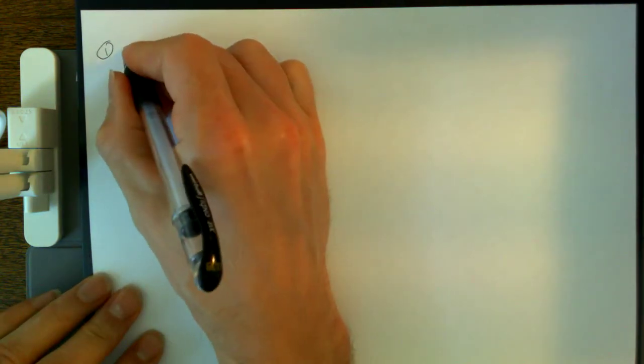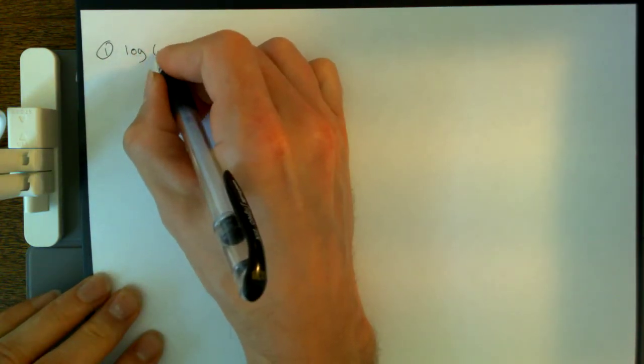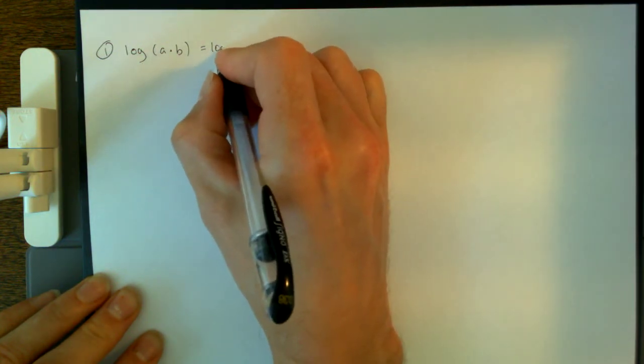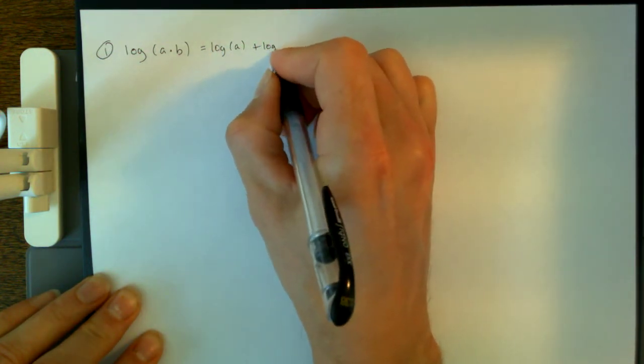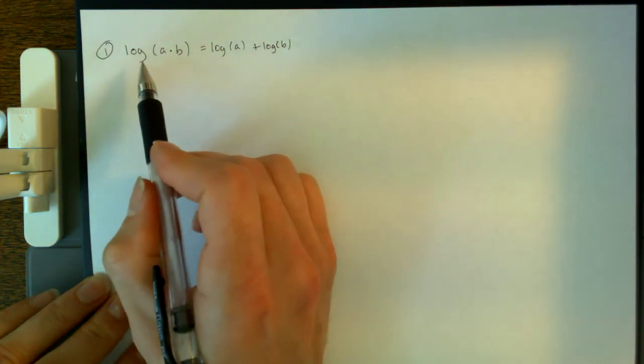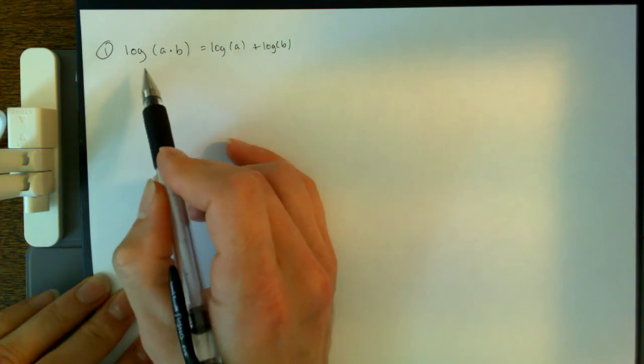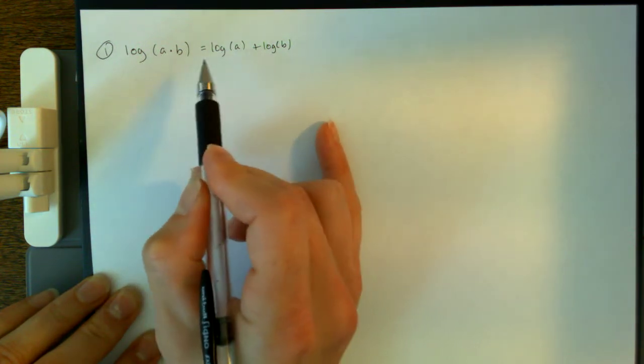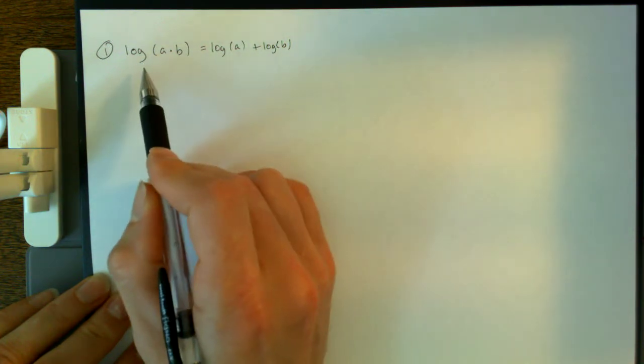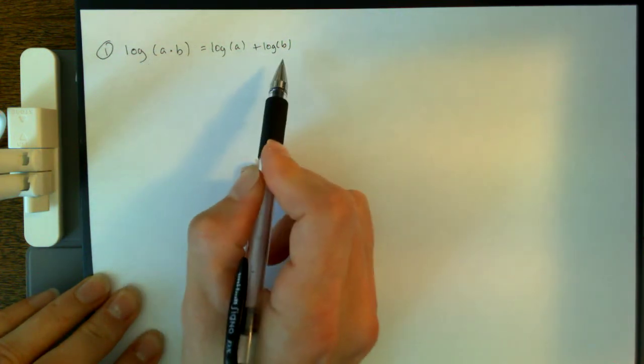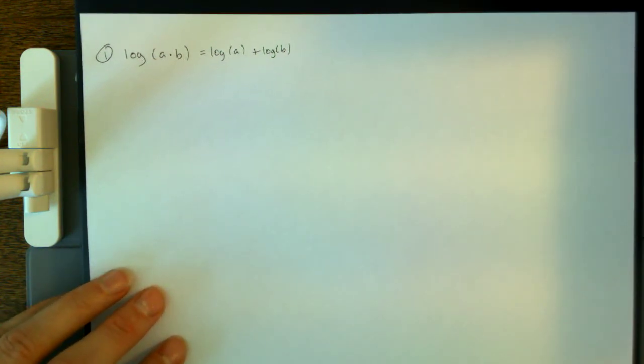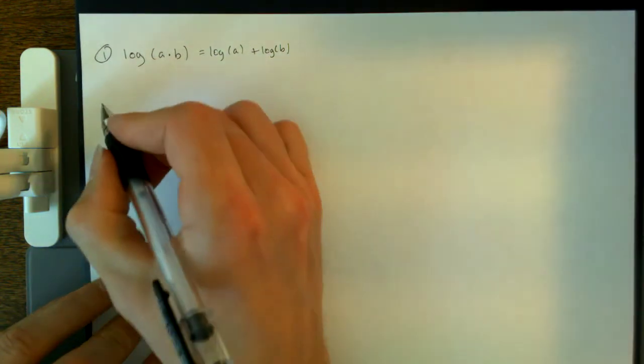So rule one is the following, that if I take the log of a times b, that's the same thing as the log of a plus the log of b. And I haven't put a base here, so you might assume, well, he only means natural log for that. That's actually not true. This rule is the same thing regardless of what base you have, as long as it's the same base in all three of those logs.